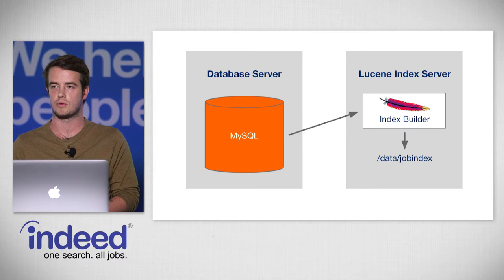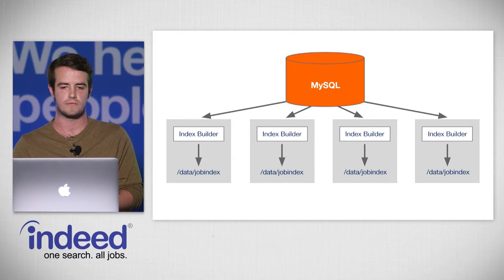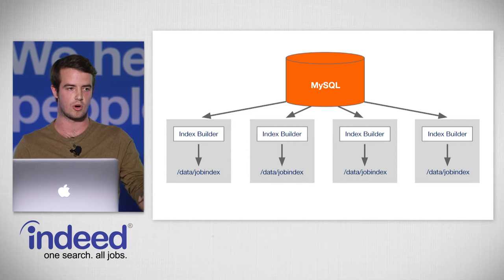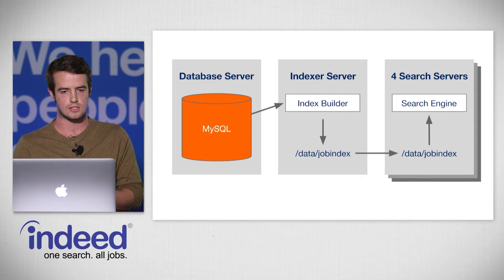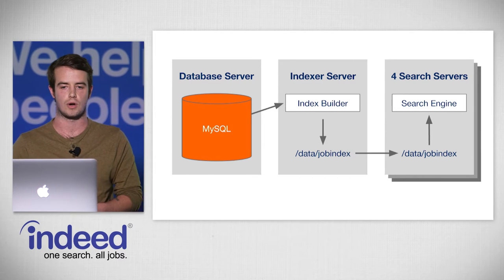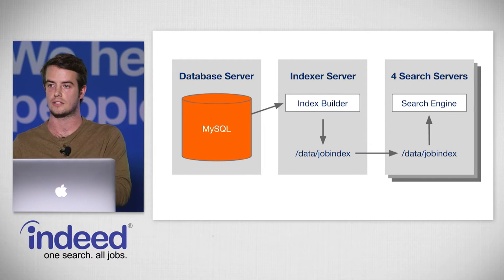We knew we were going to need many servers to keep the site up and fast all the time. We could have run our Lucene index builder on all our search engine servers, but we felt this was a waste — we'd be redoing the same work over and over and potentially crushing our MySQL server. So we wondered if we could just build the index once and ship it to our search engine servers. We decided on an architecture where one index builder reads from MySQL, creates the job index, and copies it to our search servers. We realized this could work for any combination of data, not just Lucene job data.